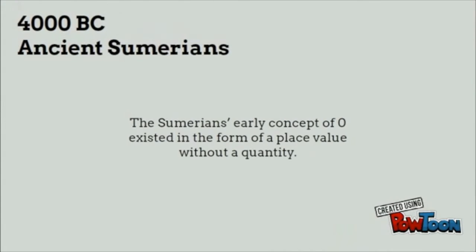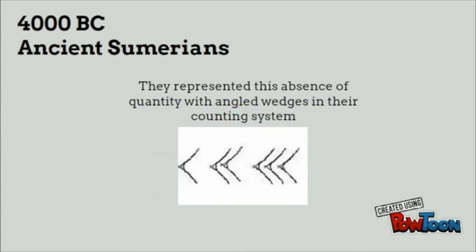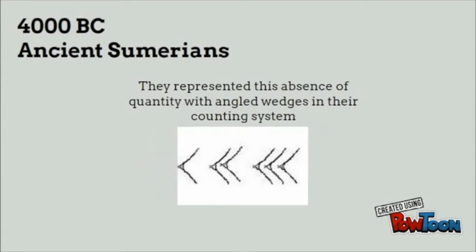The Sumerians' early concept of zero existed in the form of a place value without a quantity. For example, in the number 105, the 10's place value has nothing, so it's considered empty. They represented this absence of quantity with angled wedges in their counting system.